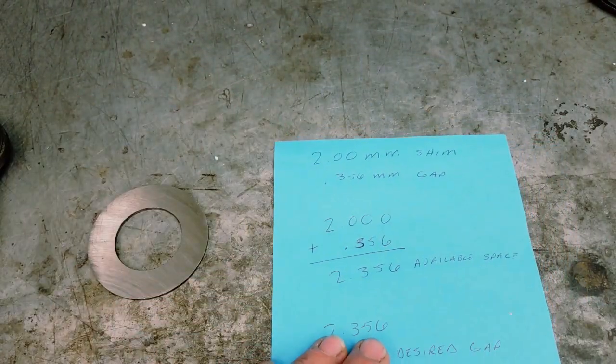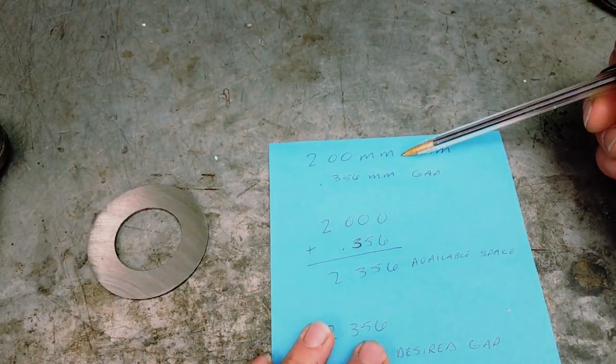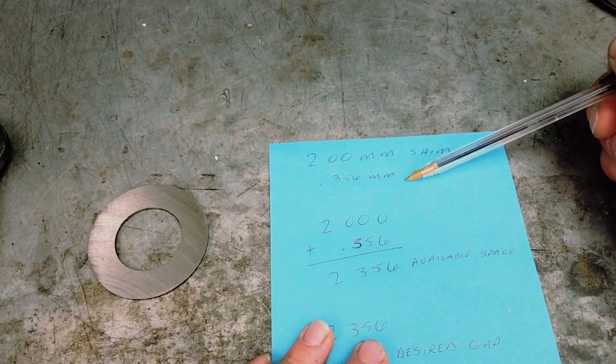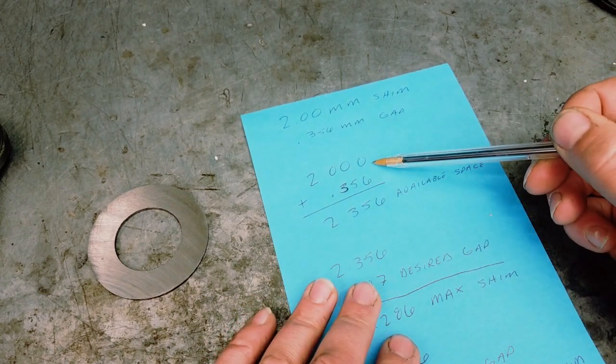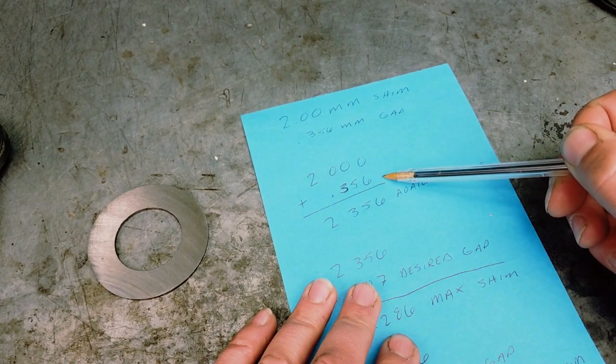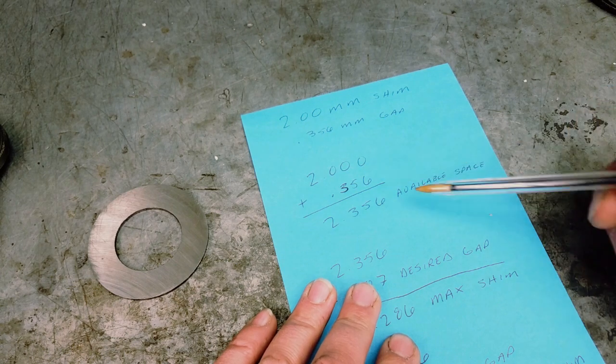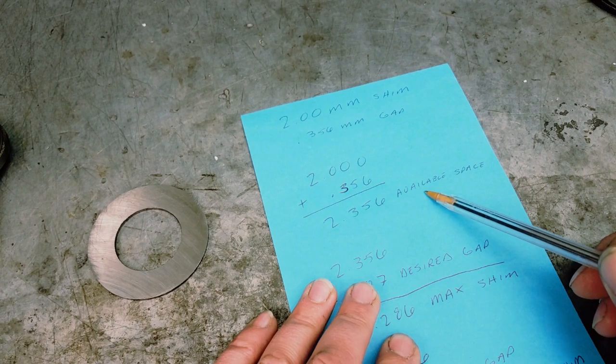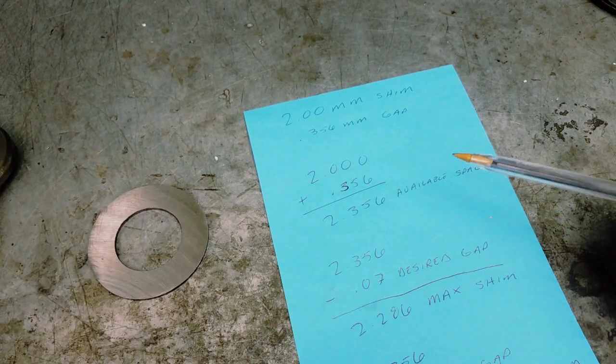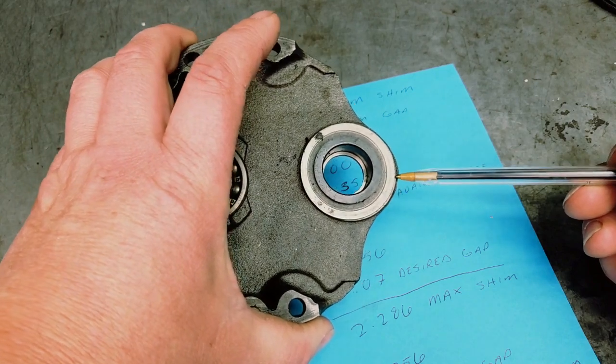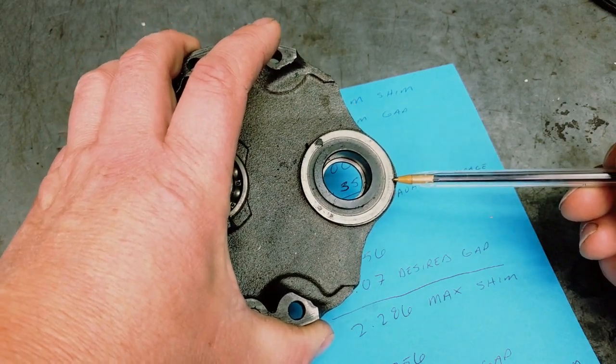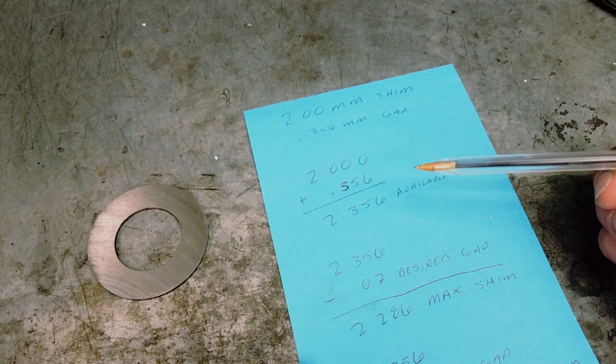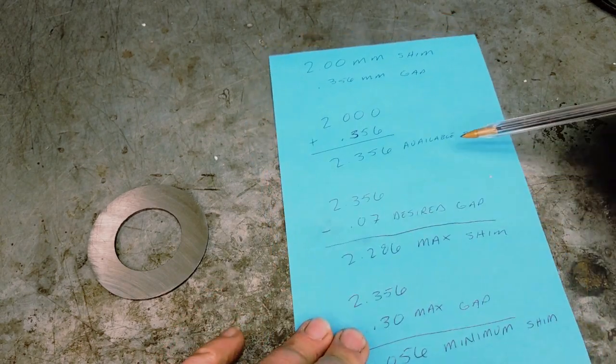Assuming we start with the two-millimeter shim and we measured a 0.356 millimeter gap, you take the two-millimeter shim, add that to the 0.356 millimeter gap, and that's going to give you the total available space. That's basically the entire space between this edge right here and first gear. That's your total available space.